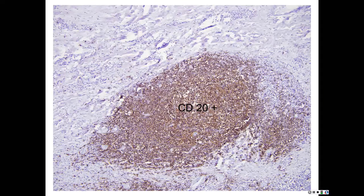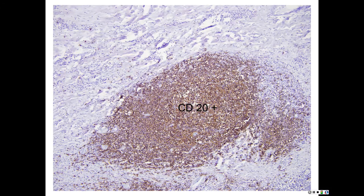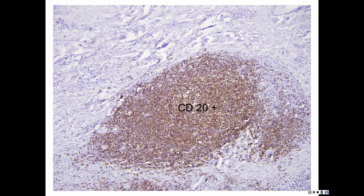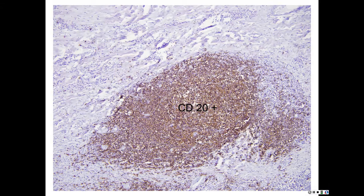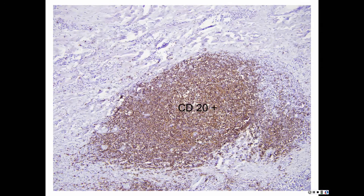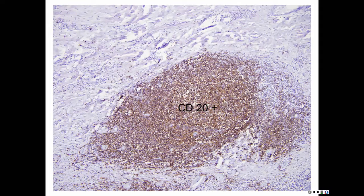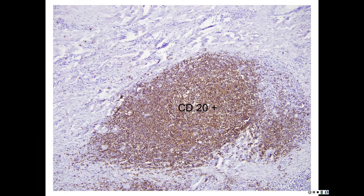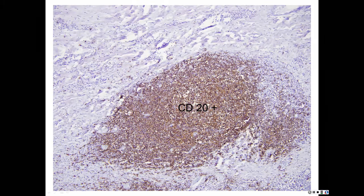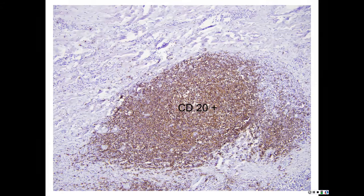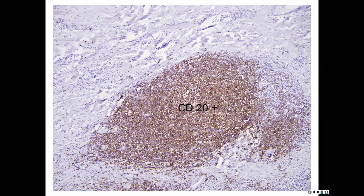B cells are CD20 positive. CD79A starts early, so pre-B cells are already positive and plasma cells are still positive, whereas CD20 doesn't hit all pre-B cells and doesn't hit plasma cells — just the middle mature B cells. So CD79A is a little broader, starts earlier, and goes a little later than CD20. Lymphomas that are CD20 negative — your major scenario is someone who's been treated with Rituximab and has a relapse.